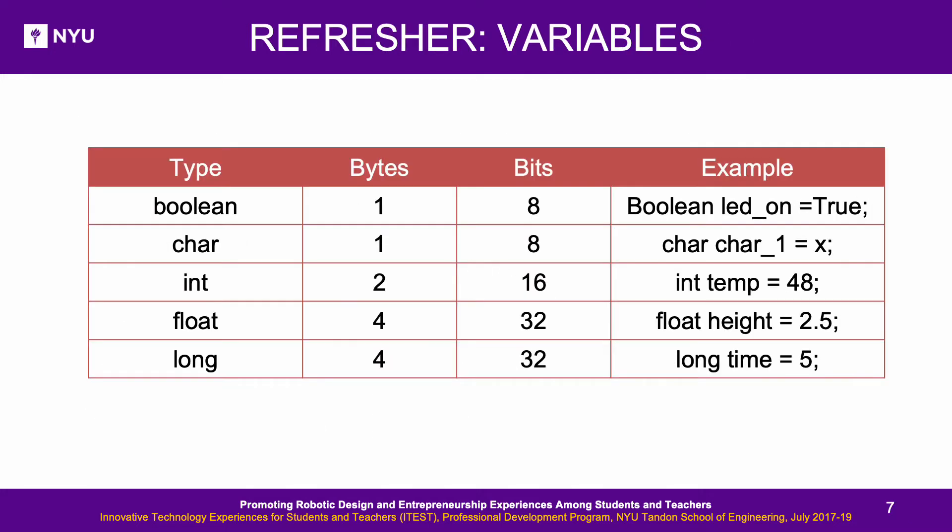Refresher — Variables: To store data, variables are used in various types depending on the requirement, as shown in the examples. Boolean and char variables occupy one byte, int occupies two bytes, and float and long occupy four bytes.